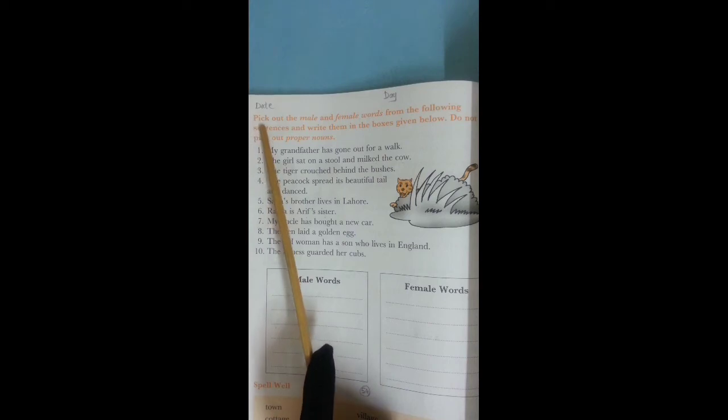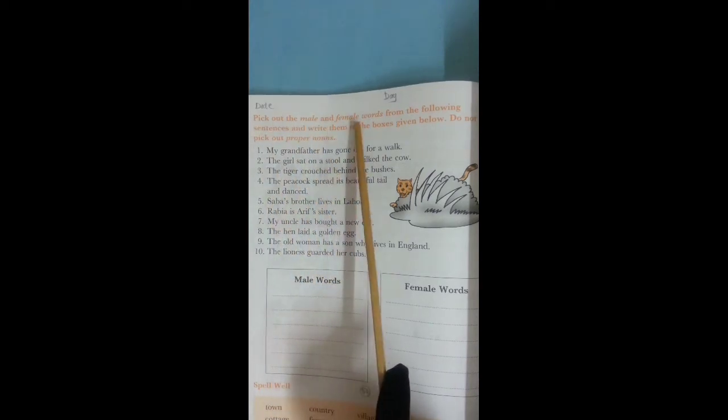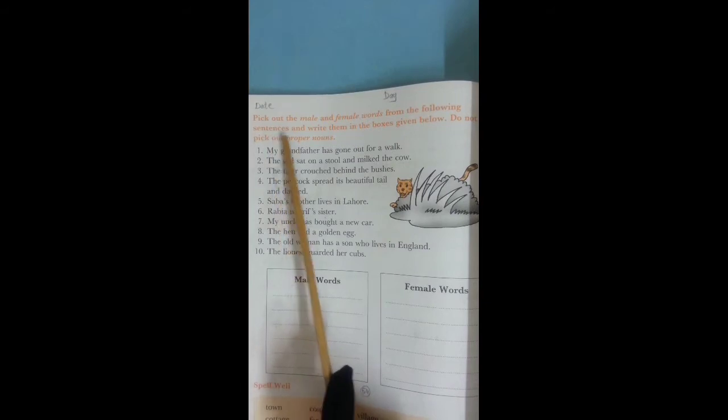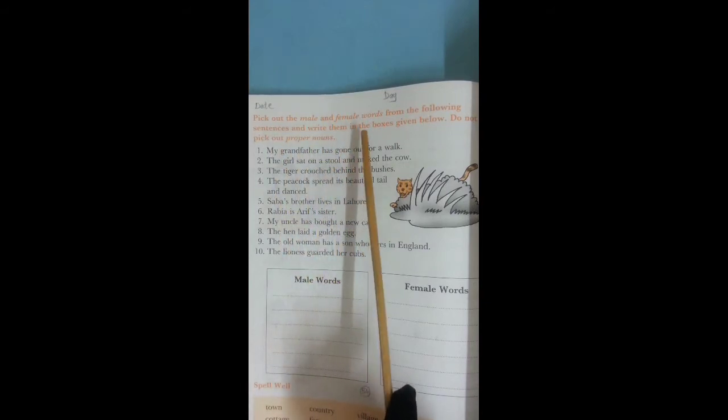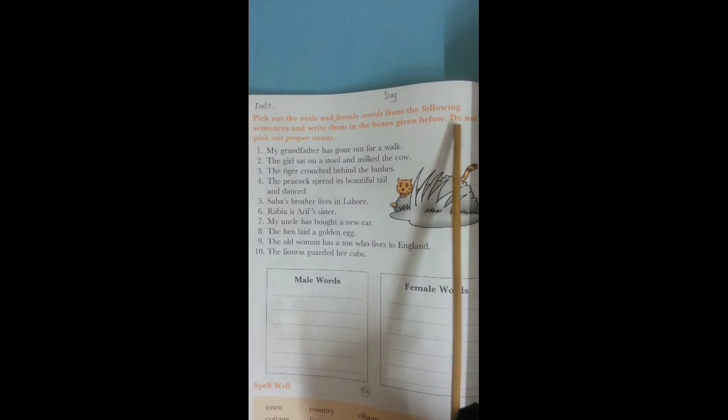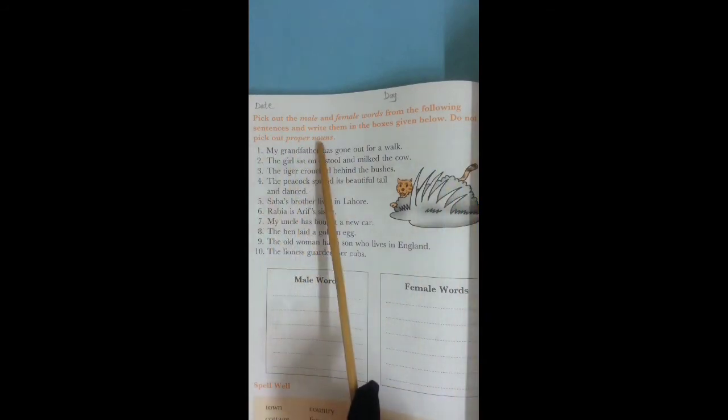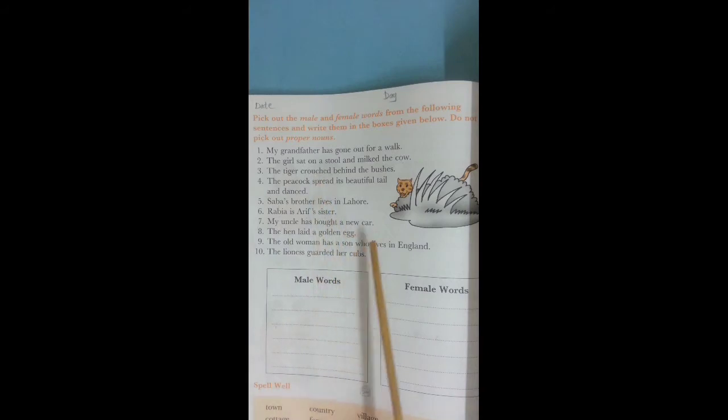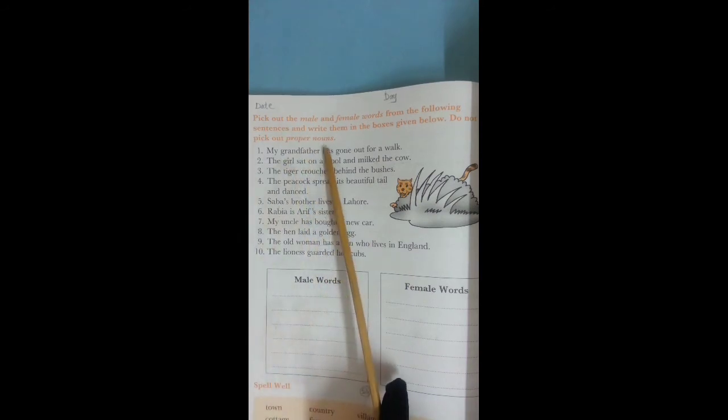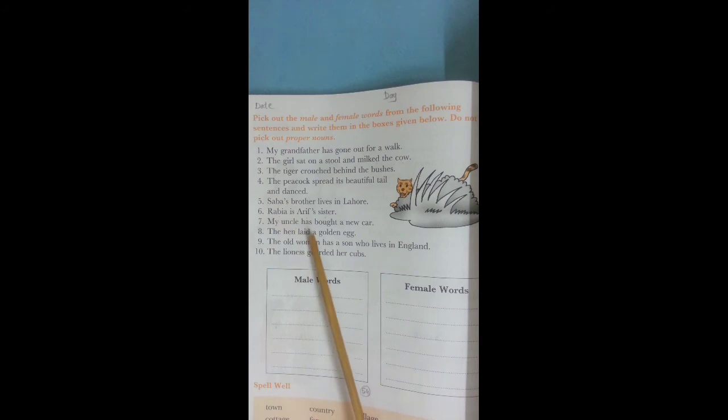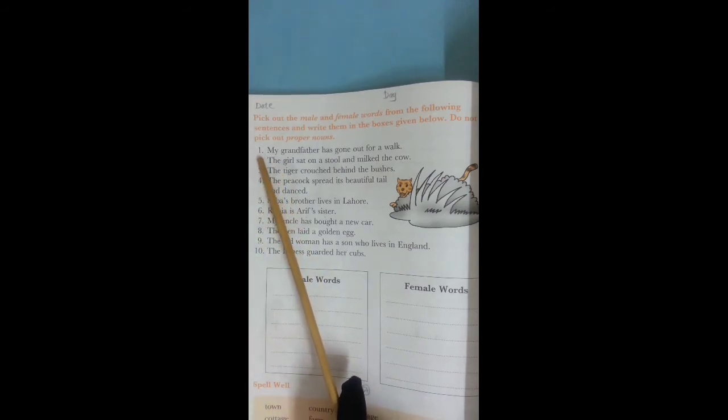Now open page number 54. Put the date and day and start this exercise. Read the caption: Pick out the male and female words from the following sentences and write them in the boxes given below.